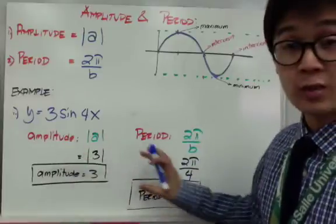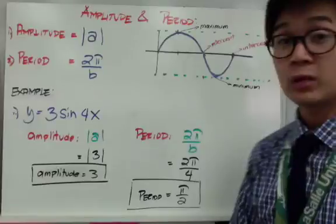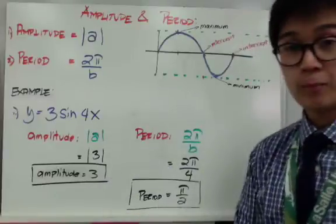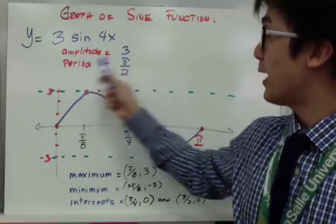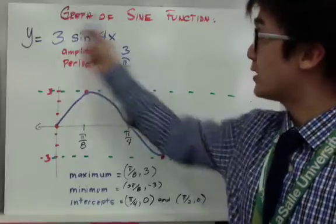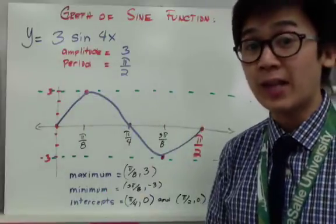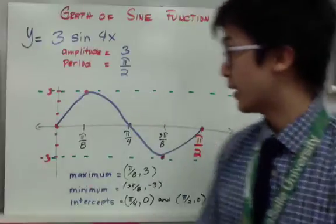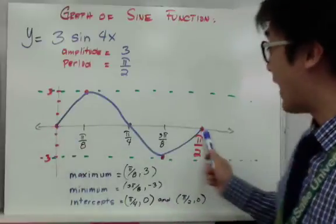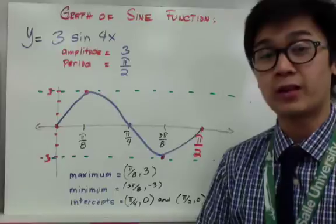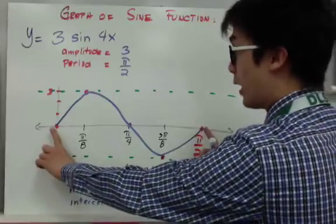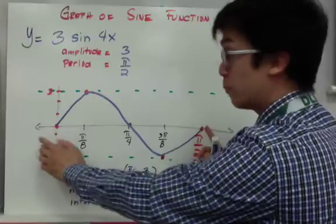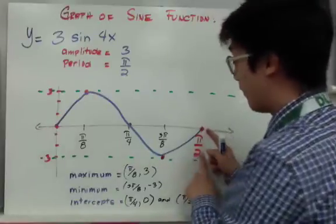So the important parts of this sine function are an amplitude of 3 and a period of π over 2. The function starts at (0, 0) and ends at π over 2. Another important step is to partition the period into four equal parts — I take half of π over 2, which is π over 4, and half of π over 4, which is π over 8.